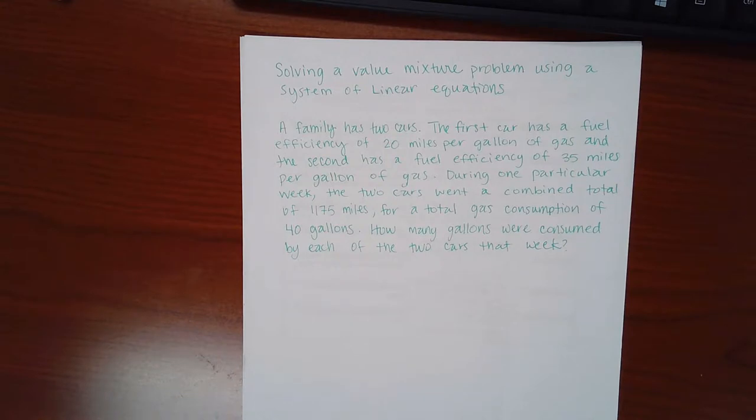So it says a family has two cars. The first car has a fuel efficiency of 20 miles per gallon of gas, and the second has a fuel efficiency of 35 miles per gallon of gas. During one particular week, the two cars went a combined total of 1,175 miles for a total gas consumption of 40 gallons. How many gallons were consumed by each of the two cars that week?